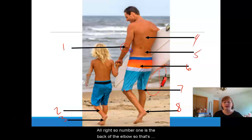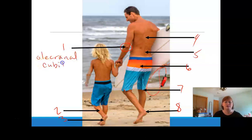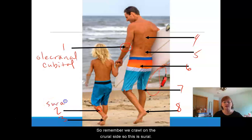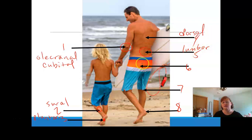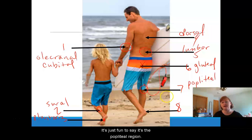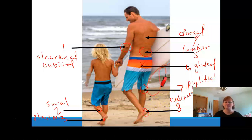Alright, so number one is the back of the elbow — that's going to be olecranal or cubital. Number two is the back of his calf — remember we crawl on the crural side, so this is sural. The bottom of the foot is where you get plantar warts, so that's plantar. His back is dorsal. His low back here is lumbar. This would be his buttocks — so gluteal. Back of his knee is just fun to say — it's the popliteal region. And his heel is calcaneal.